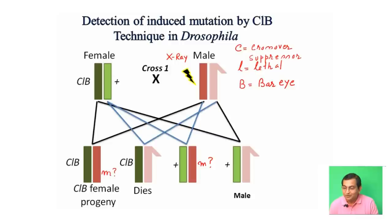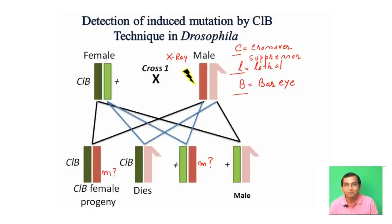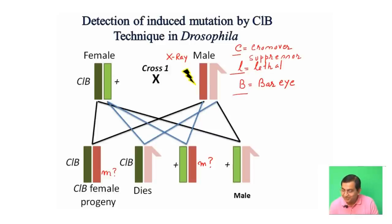In his Drosophila stock there is a female called the CLB female. It has three components: a crossover suppressor, a recessive lethal, and a Bar eye phenotype by which a Drosophila can be detected. The crossover suppressor is an inversion which prevents recombination. In the first cross, he crossed a CLB female with an X-ray irradiated Drosophila male. In the first generation, he obtained CLB females potentially carrying an irradiated X chromosome. CLB males die due to expression of lethal genes, since normal alleles are not present on the Y chromosome.